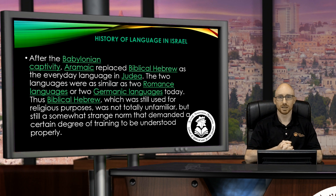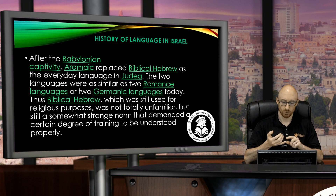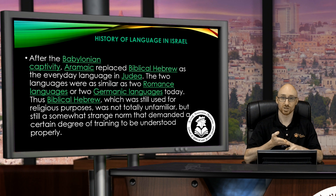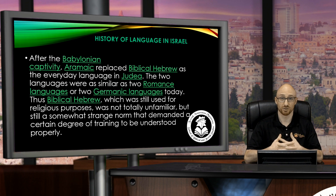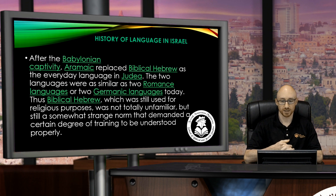After the captivity, Aramaic became the main spoken language. Aramaic, like Hebrew and Arabic, is a Semitic language — they're like sister languages. Think of today's Romance languages: French, Latin, Italian, Spanish. They all have similarities in word order, sentence structure, grammar, and sometimes even vocabulary. That's what Aramaic is like with Hebrew. The two languages were as similar as two Romance languages or two Germanic languages today.